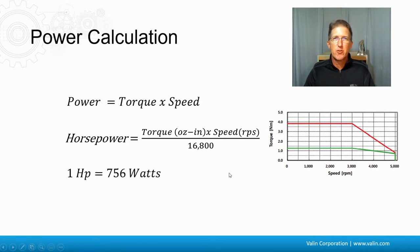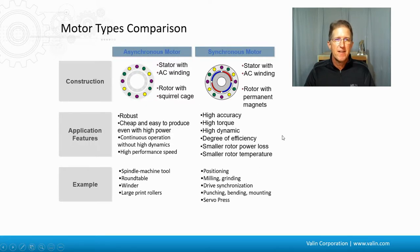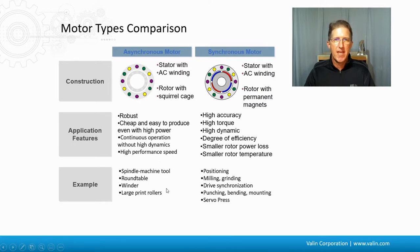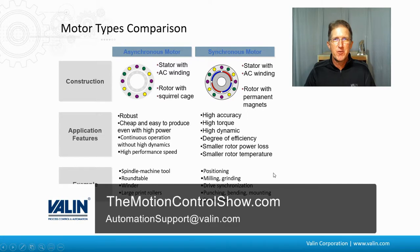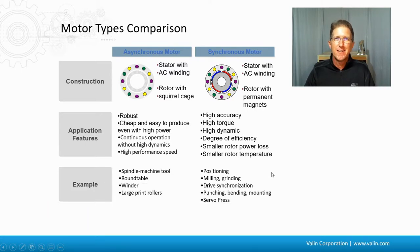One horsepower is equal to 756 watts. One last comparison: the important part about this graphic is the different types of applications. Asynchronous motors are really better at continuous velocity sort of applications, whereas synchronous motors are needed for more accurate velocity and also positioning type applications. I hope that helps. I'm Corey Foster of Valen Corporation — reach out to us. Thank you, John Brokaw, for assisting. I learned a lot today.